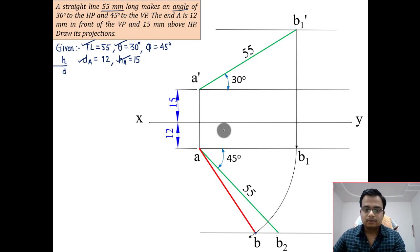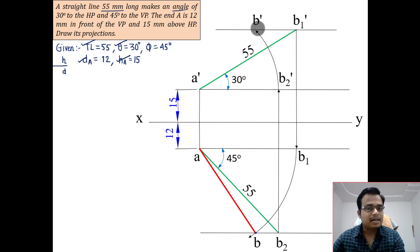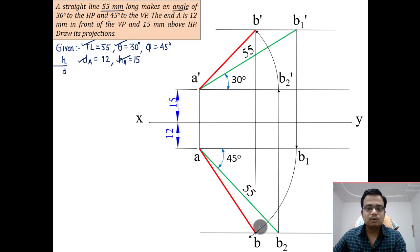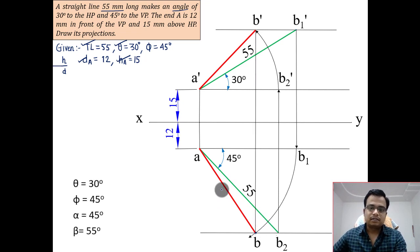In the same manner, you can project this upwards. This is B2 dash. With A dash as center and with A dash-B2 dash as the radius, rotate in the anticlockwise direction. This point is going to give you B dash. Join A dash with B dash, that's the final front view. When you join B dash with B, it's going to be an absolute straight line.